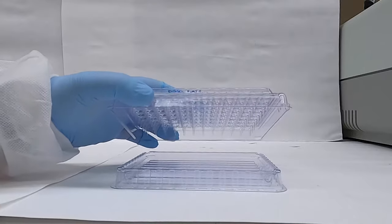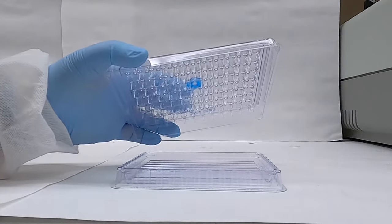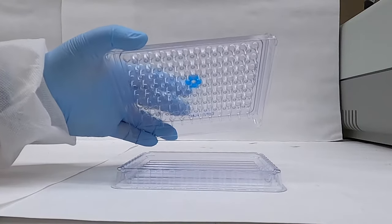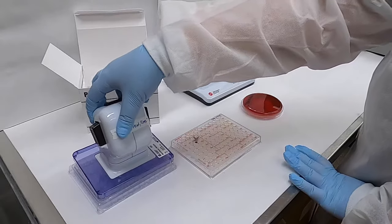You can see here that the lid of the dispensing device contains these 96 micropipettes which are responsible for transferring our bacterial suspension from the reservoir into our susceptibility test plate which you can see here on the right.